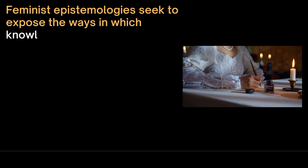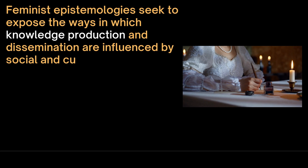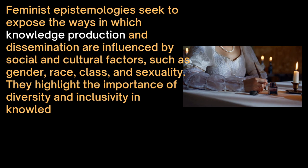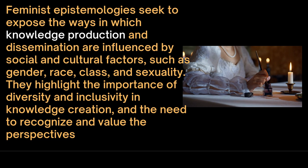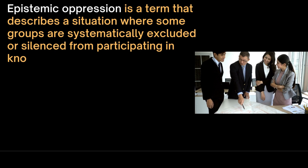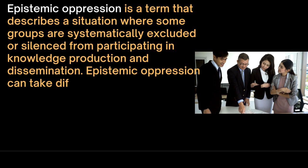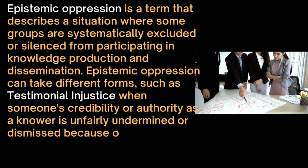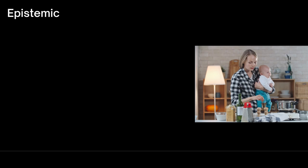Feminist epistemologies seek to expose the ways in which knowledge production and dissemination are influenced by social and cultural factors such as gender, race, class and sexuality. They highlight the importance of diversity and inclusivity in knowledge creation. Epistemic oppression describes a situation where some groups are systematically excluded or silenced from participating in knowledge production and dissemination. It can take the form of testimonial injustice — when someone's credibility as a knower is unfairly undermined or dismissed because of their social identity, for example gender.